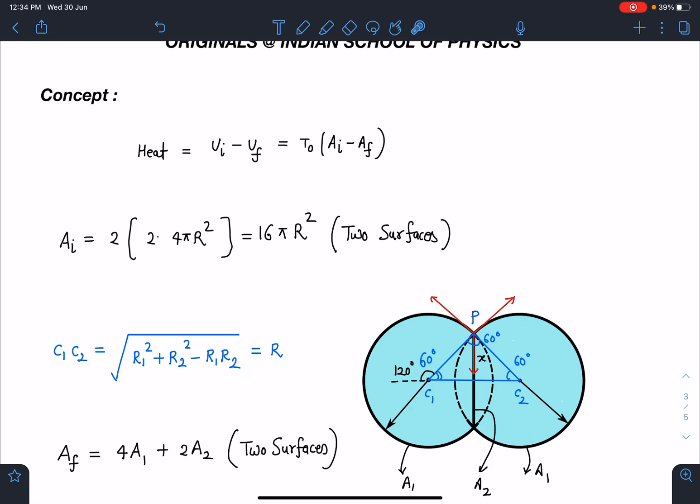Each with the area of 4πR² for one bubble, so the surface area is 2 times 4πR². There are two such bubbles, so total area initially will become 16πR².